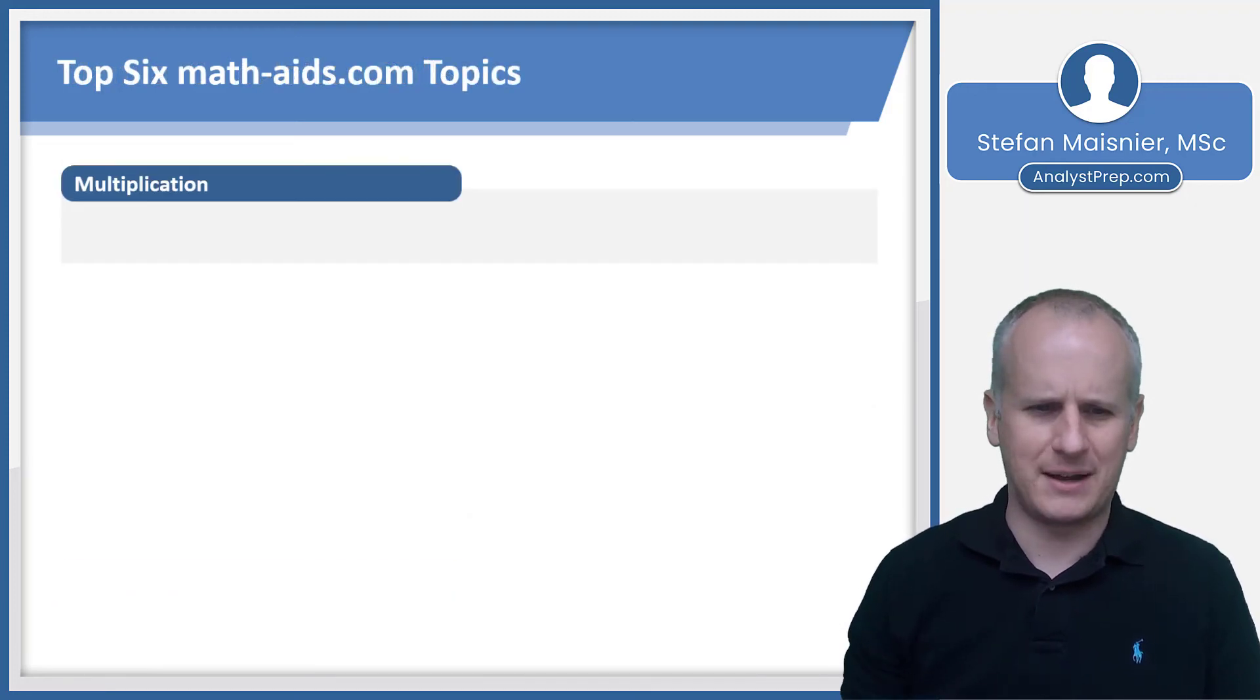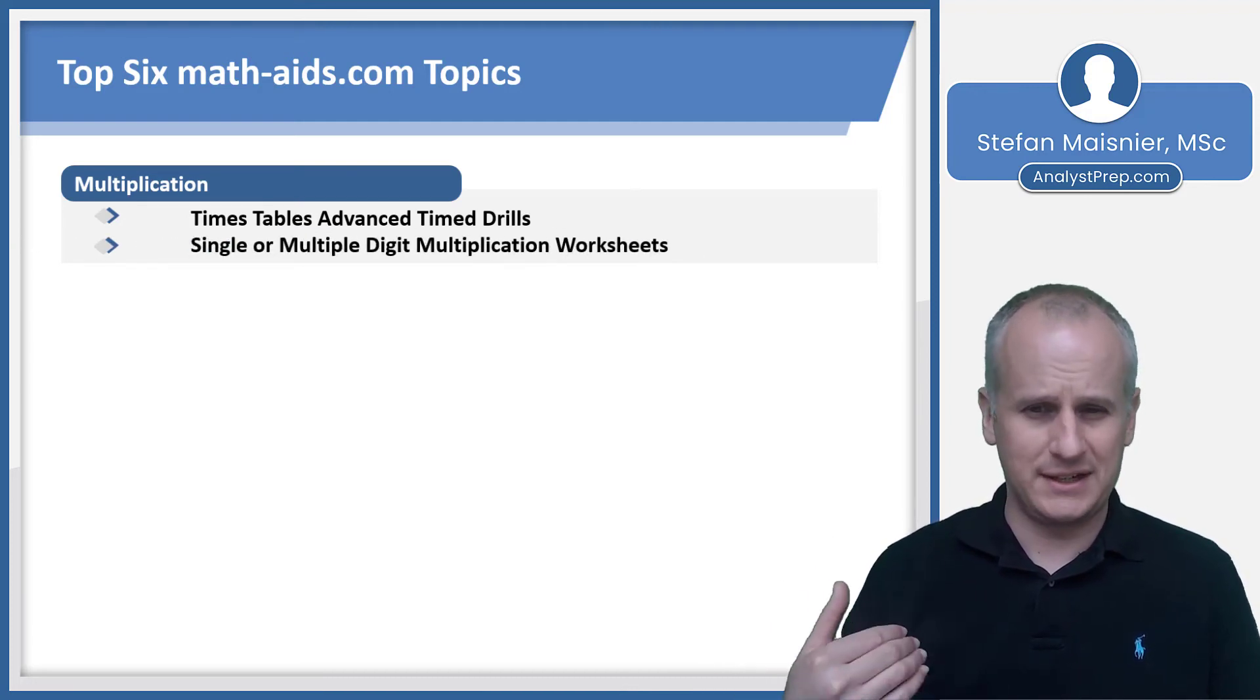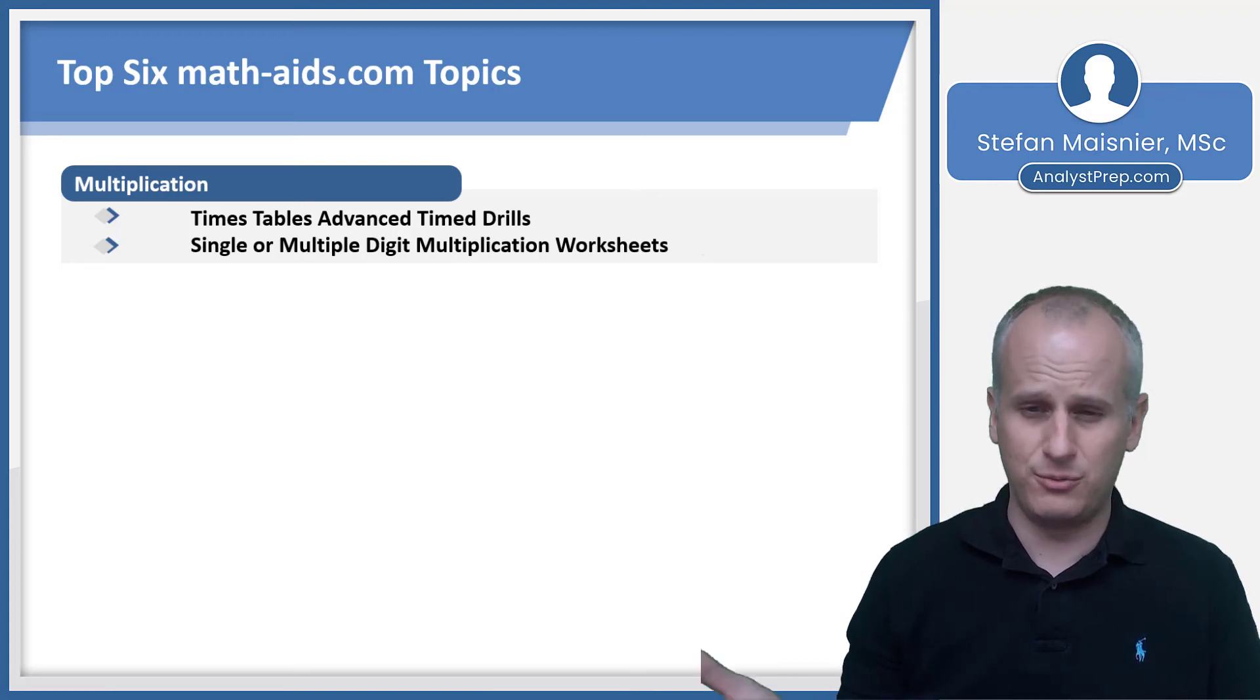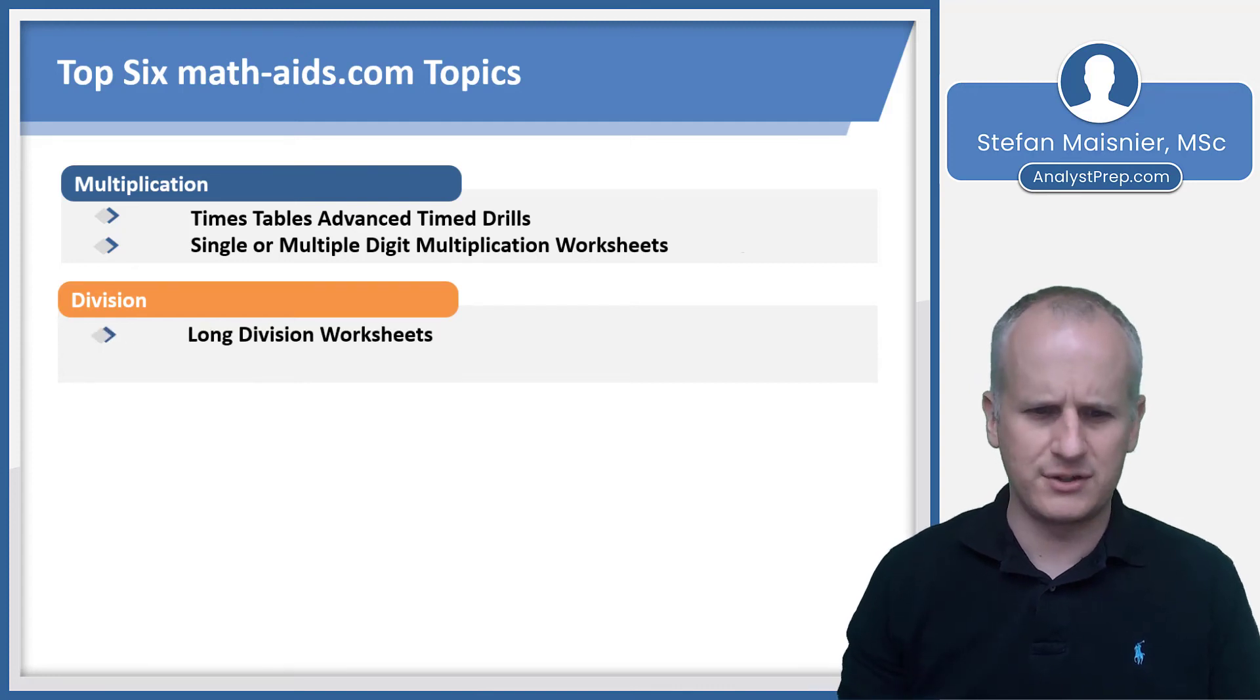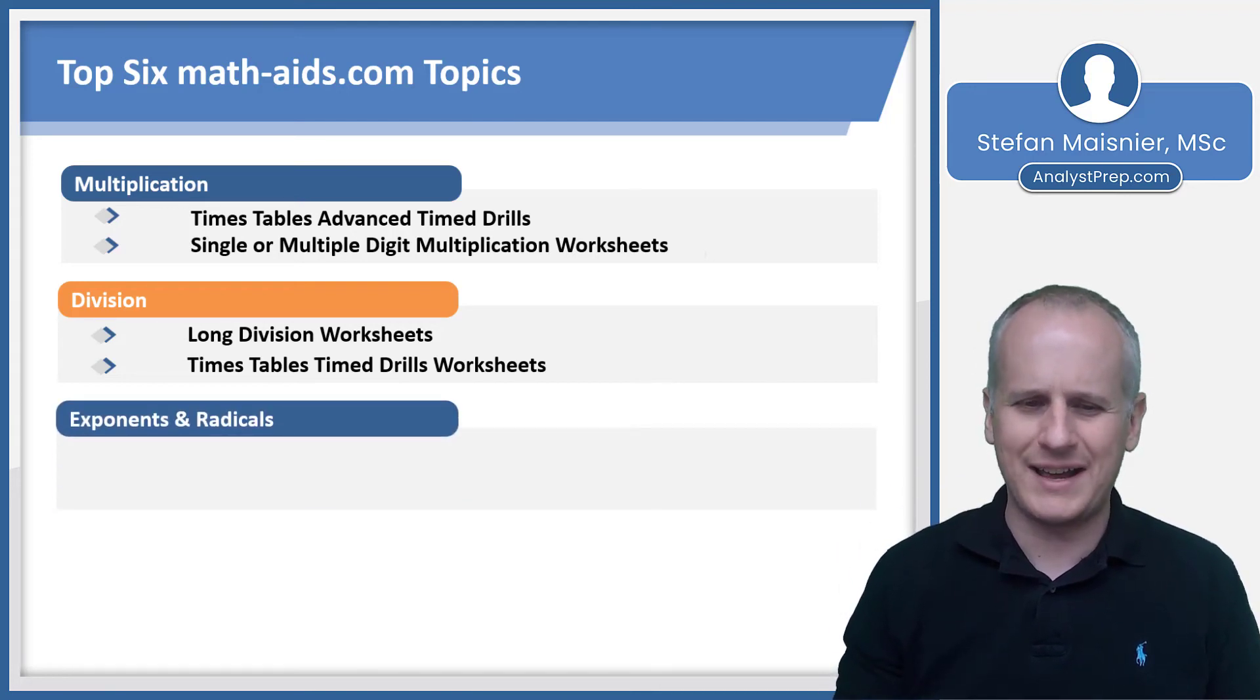What are the top six Math Aids topics? First, multiplication. You need to be able to do your times tables, and you can get some advanced times drills. You basically want to get up to 15 squared. You can do either single or multiple digit multiplication worksheets to practice the skills we just illustrated. You'll also want to do division, so you'll want to do the long division worksheets. You can do times tables, time drills worksheets here as well, single or multiple digits. You probably don't need to go beyond two digits, but it's just good practice for division.